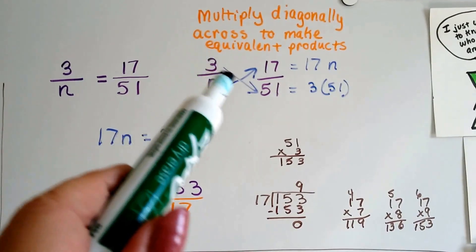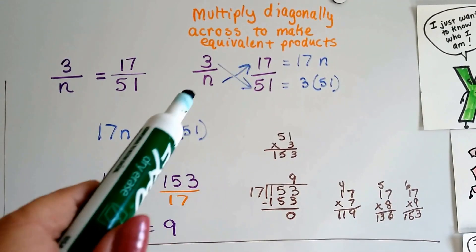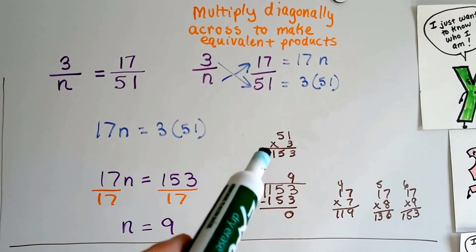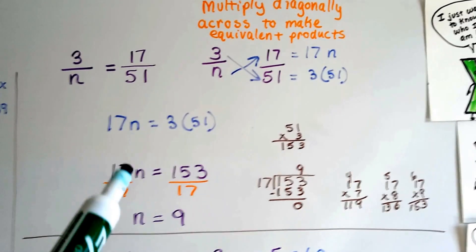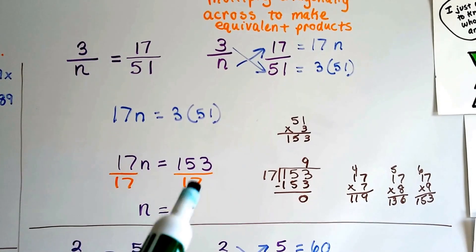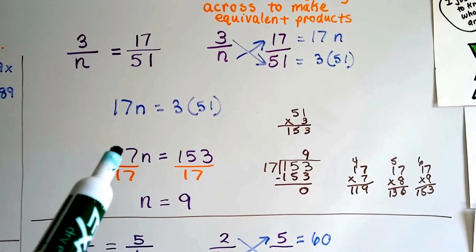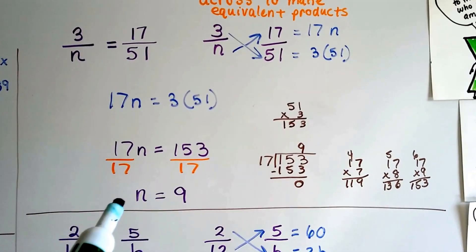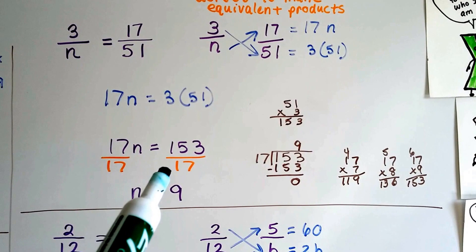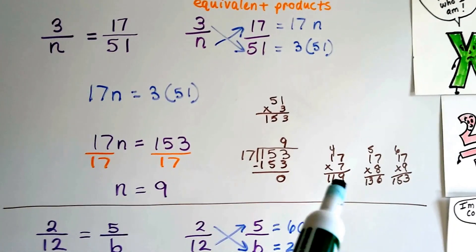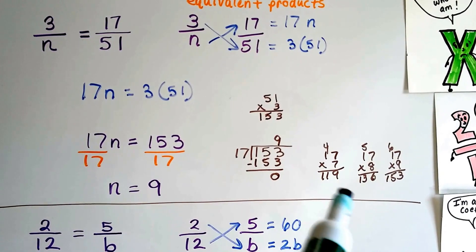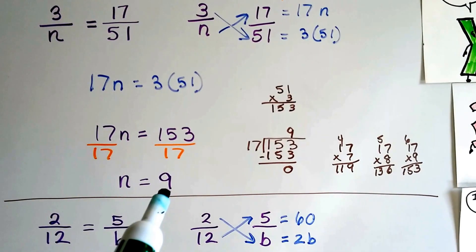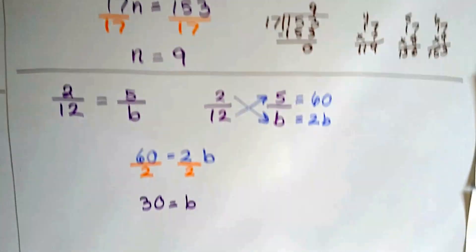So we're going to multiply 3 times 51, n, 17, and n. We're going to get 17n equals 3 times 51. Well, 51 times 3 is 153. So we have 17n equals 153. We can divide both sides by this coefficient 17. And we get 17 over 17, which is 1. That's the identity property, buddy the invisible one. And 153 divided by 17. I did a bunch of multiplication on the side. And 7 was too little, 8 was too little. And finally, when I did 17 times 9, I got 153, which is that. So I knew it was a 9.